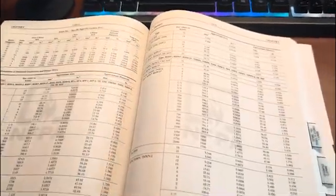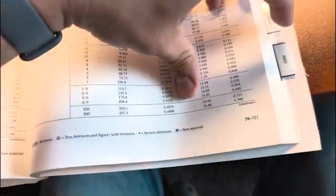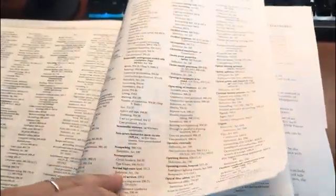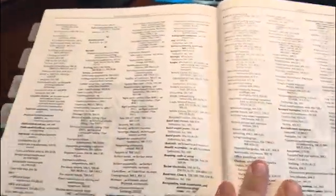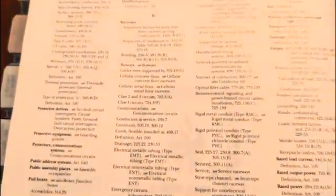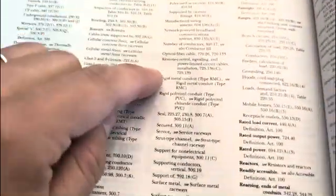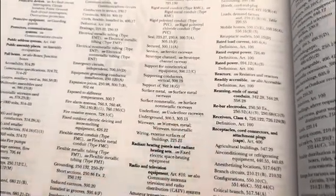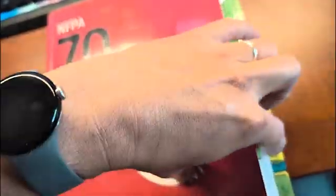Using the table of contents isn't super friendly, so let's use the index instead. We'll go to the index and look for raceways — L, M, N, O, P, R — and we find raceways. Now let's look for 'underground' — underground 300.5. So that's what I want to see right there: 300.5. I think it's going to be article 300 somewhere because it's a general wiring method.